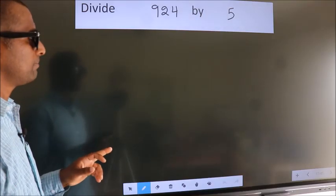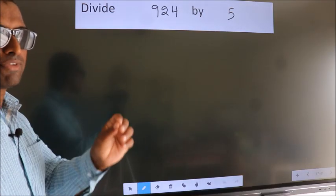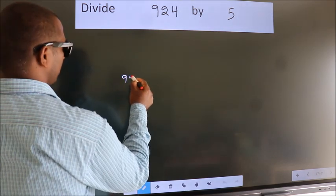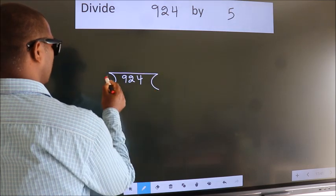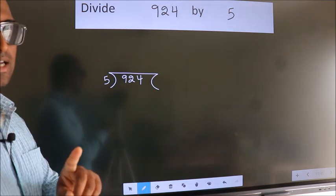Divide 924 by 5. To do this division, we should frame it in this way. 924 here, 5 here. This is your step 1.